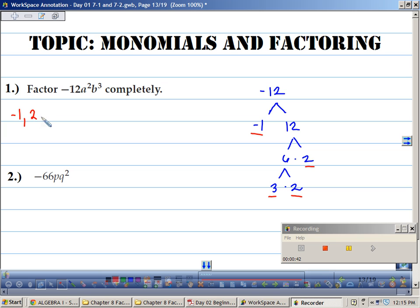Negative 1, 2, 3, 6, and what am I missing? 12. Okay, what else do I need to add for this to be completely factored? Two a's and three b's. Is everything represented? Yes.